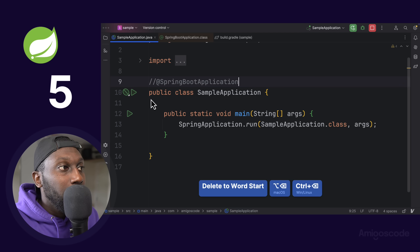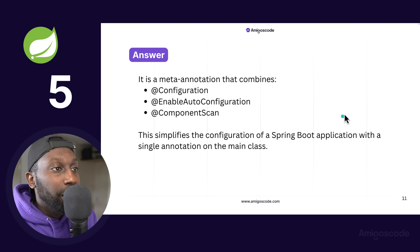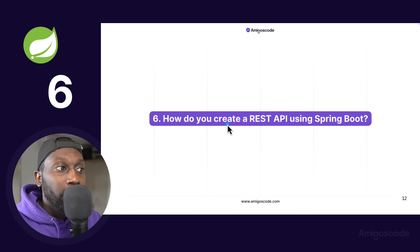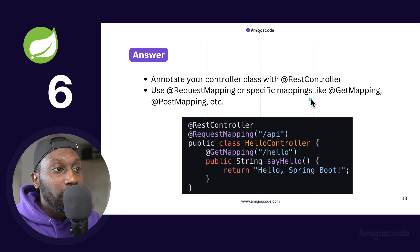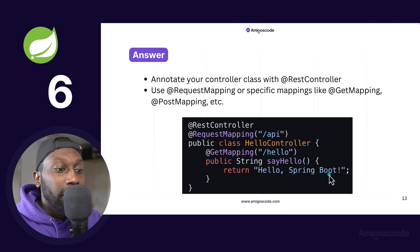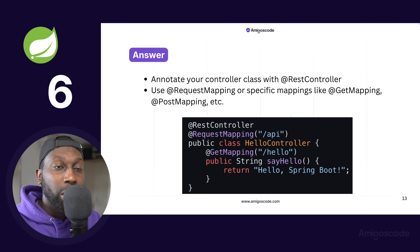@Configuration marks the class as a source of bean definitions. @ComponentScan tells Spring where to find and initialize those beans — by default it uses the default package and sub-packages, but you can specify base packages. @EnableAutoConfiguration tells Spring Boot to auto-configure everything based on what's on the classpath. The next question is: how do you create a REST API using Spring Boot? You annotate the controller with @RestController, use @RequestMapping for mappings, and then @GetMapping, @PostMapping, @DeleteMapping, and so forth.